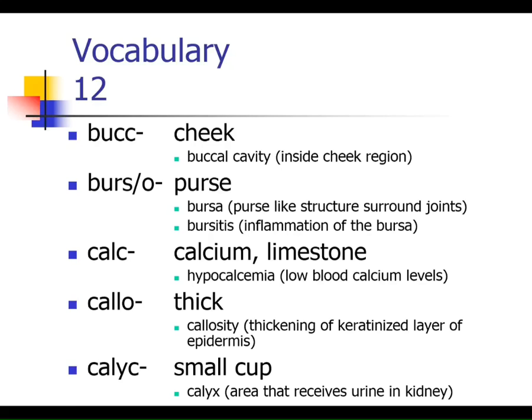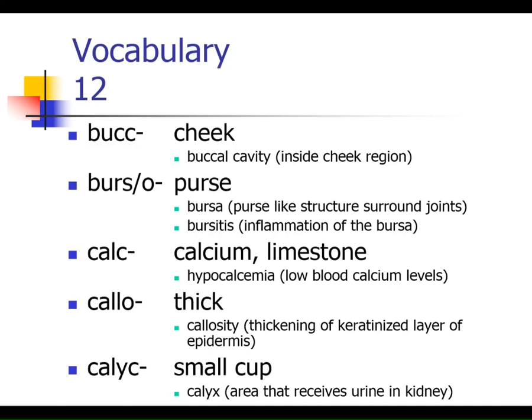'Callum' — if you have a callus, you have thickened skin, so callum means thick. 'Calix' is a small cup; when we get to the kidneys, urine first drains into calices, those cup-like structures. 'Capito' — capitis refers to the head; the capitis is the head of a bone. 'Carcin' means cancer — something carcinogenic is cancer-causing. 'Cardio' means the heart. 'Carpo' — the carpus or carpals refers to the wrist.